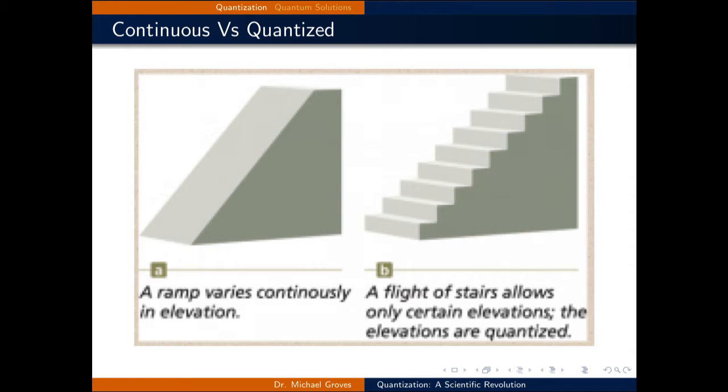Conversely, if someone walks up stairs, their height is dictated by the elevation change of the stairs, and can only be these values. In this case, the height is said to be quantized. You can think of quantization as the staircase, where the quantity that is quantized can only have certain set values. A key point to remember here is that in the quantum worldview, it is impossible for the quantity which is quantized to take on any intermediate value.